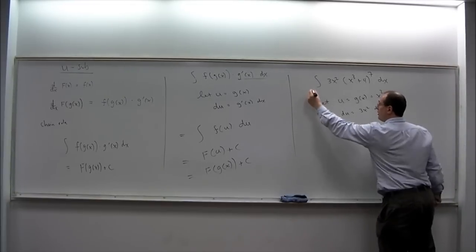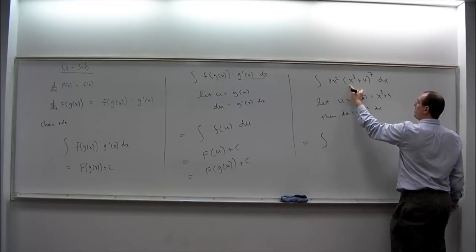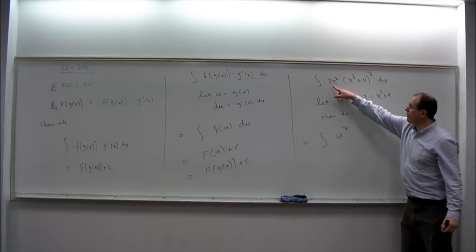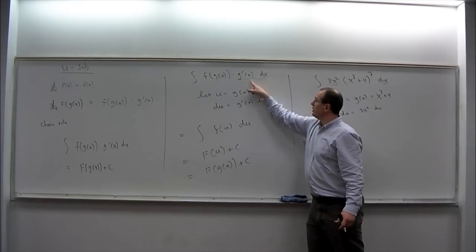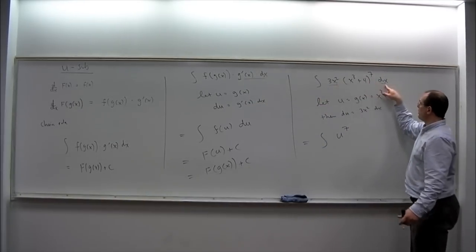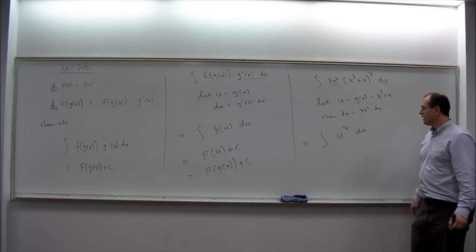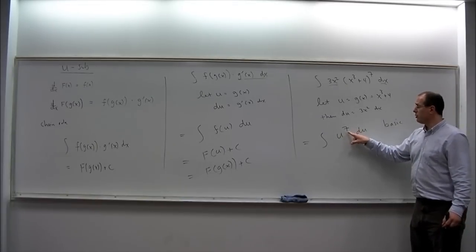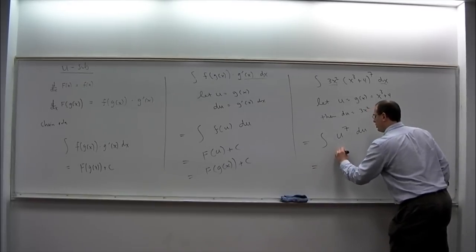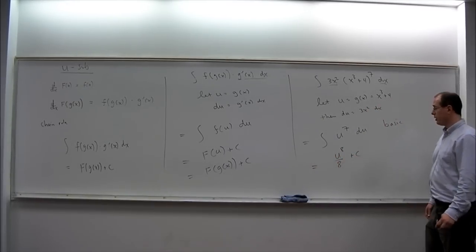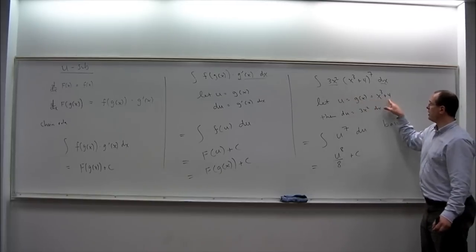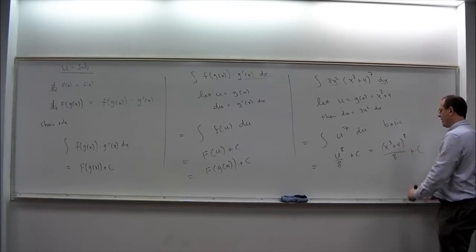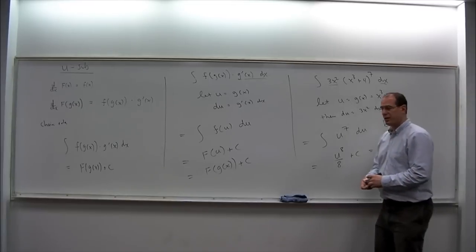Substituting, the original integral becomes the integral of U to the 7th, and 3x squared dx is DU. So now we have a basic integral in the variable U. The integral of U to the 7th DU from the power rule is U to the 8th over 8 plus C. Then we back-substitute: U was equal to x cubed plus 4. So the final answer is (x cubed plus 4) to the 8th over 8 plus C.